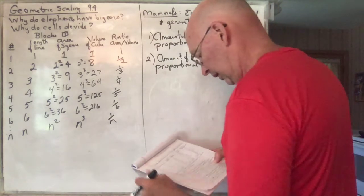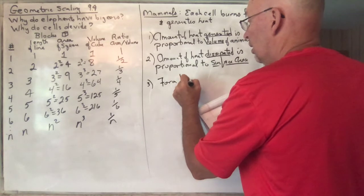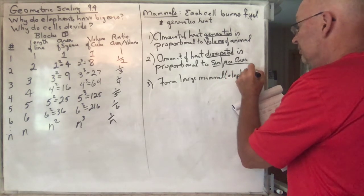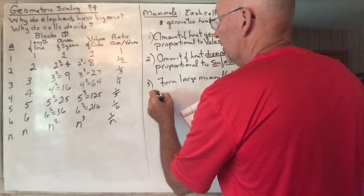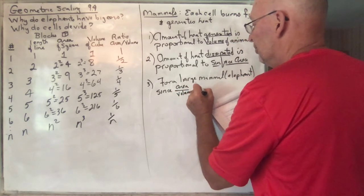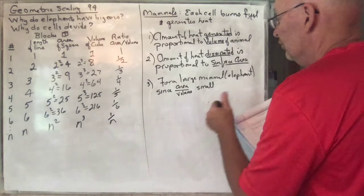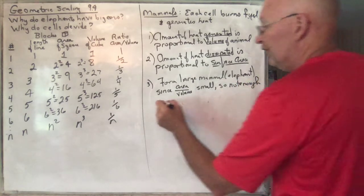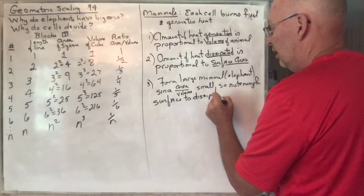So the amount that you generate is proportional to the volume; the amount that you get rid of is proportional to your surface area. For a large mammal such as an elephant, since the area-to-volume ratio is small — because as you get bigger and bigger, the ratio of area to volume decreases — there is not enough surface area to dissipate all the heat energy.